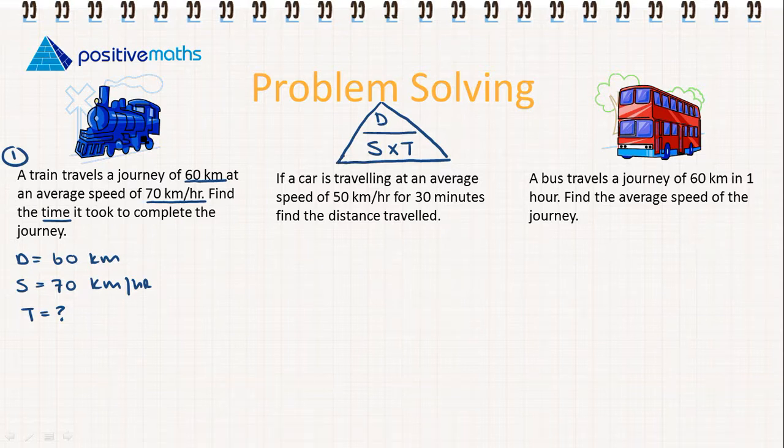So if we cover T we find that time is equal to distance divided by speed. So for this question that is 60 divided by 70. 60 divided by 70 is going to give us 0.857. That's 0.857 of an hour. So let's multiply that by 60 in order to find how many minutes that's going to be. So it's 51 minutes. I've just rounded that off.